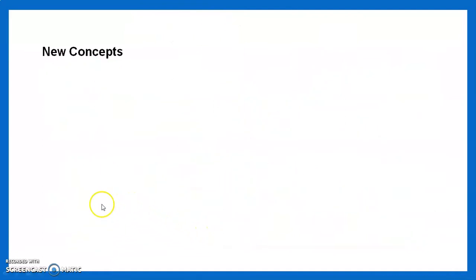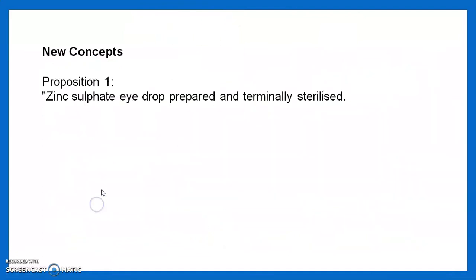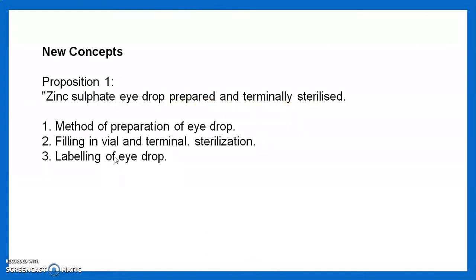New concepts in this experiment: zinc sulfate eye drop is prepared and terminally sterilized. Terminal sterilization means after making the preparation and filling it into the final container, the whole preparation is then sterilized. The key concepts are method of preparation of eye drops, filling in a vial, terminal sterilization, and labeling of eye drops.